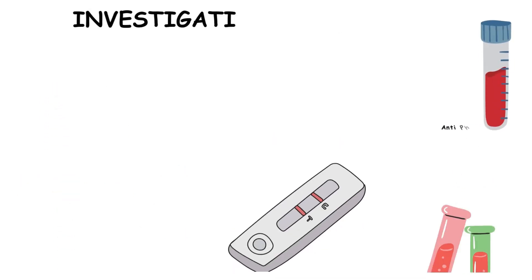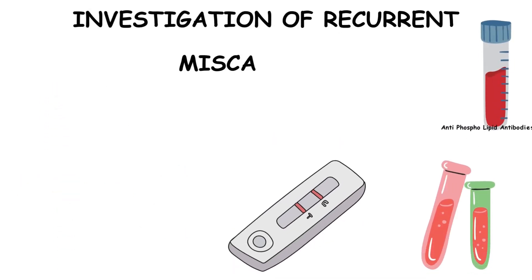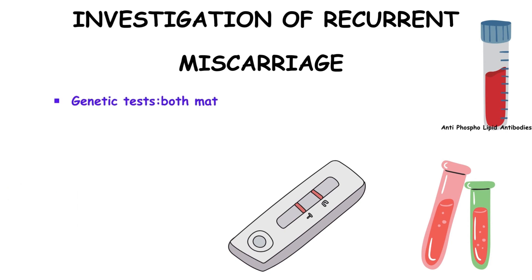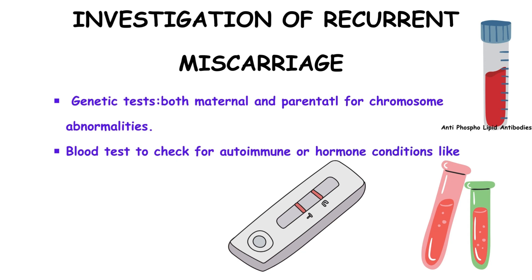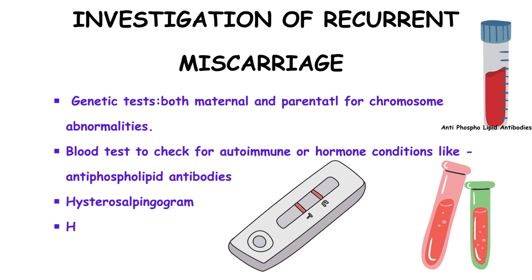The investigation of recurrent miscarriage involves genetic tests for both maternal and paternal chromosome abnormalities, blood tests to assess autoimmune or hormone conditions such as antiphospholipid antibodies, and diagnostic procedures like hysterosalpingogram, hysteroscopy, and laparoscopy.